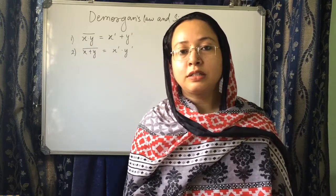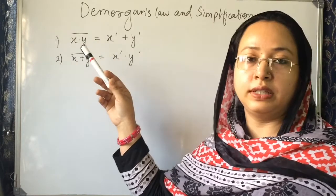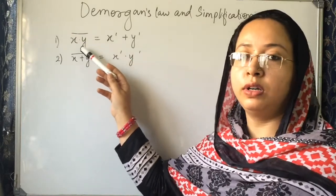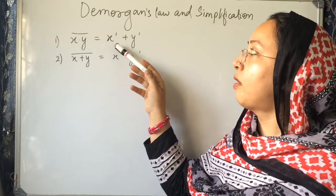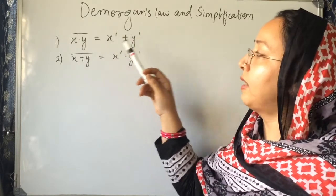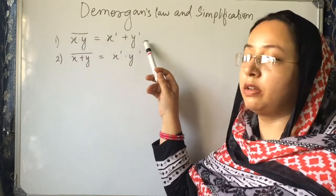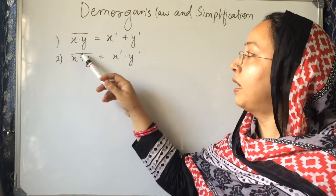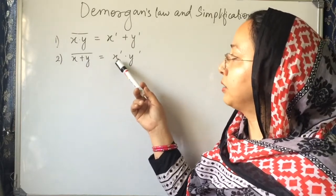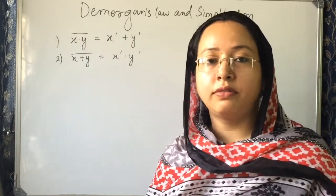De Morgan's Law says that if we have added two variables — x dot y — and after that we are complementing the whole term, then the result will be x complement plus y complement. So: x dot y whole bar is equal to x complement plus y complement, and x plus y whole bar is equal to x bar dot y bar. These two are De Morgan's Laws and they are very important for simplifications.